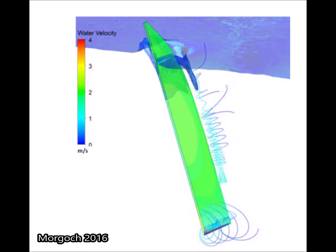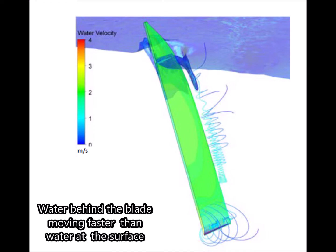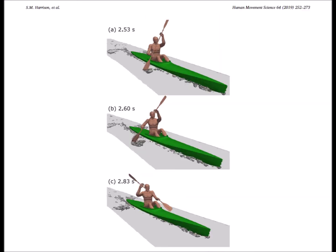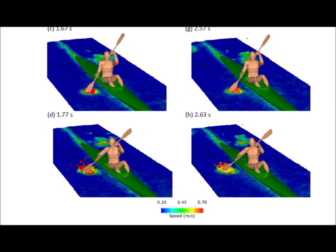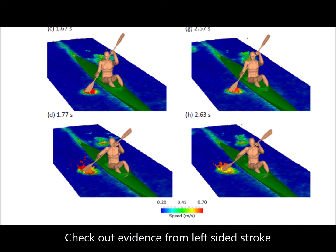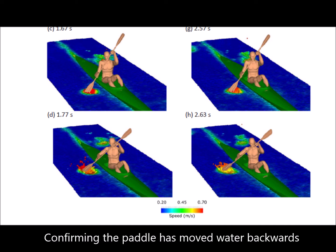A study by Morgok confirms that the water behind the blade is moving with velocity. Here we see a description of how the blade moves water, and we also see how the velocity of the water is higher after leaving the paddle face, which confirms that the water is moving backwards.